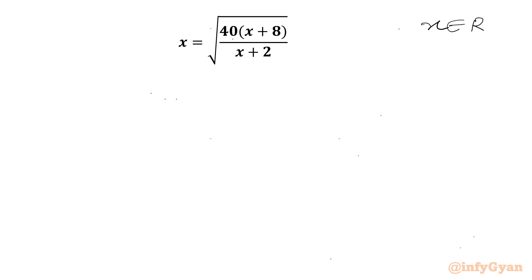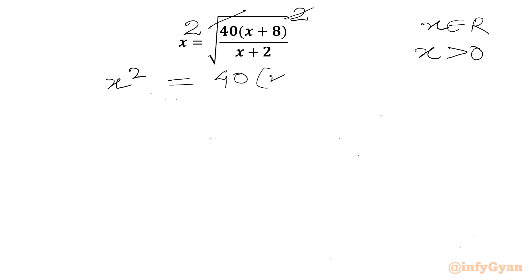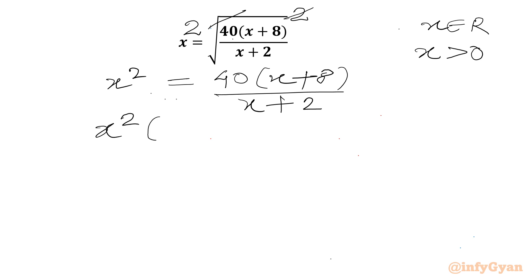Let us get started by writing x must be greater than 0. Now I will consider squaring both sides. From the RHS we can cancel the square root with the square. So x squared will be equal to 40 times (x plus 8) over (x plus 2). We can cross multiply to get x squared times (x plus 2) equal to 40 times (x plus 8).